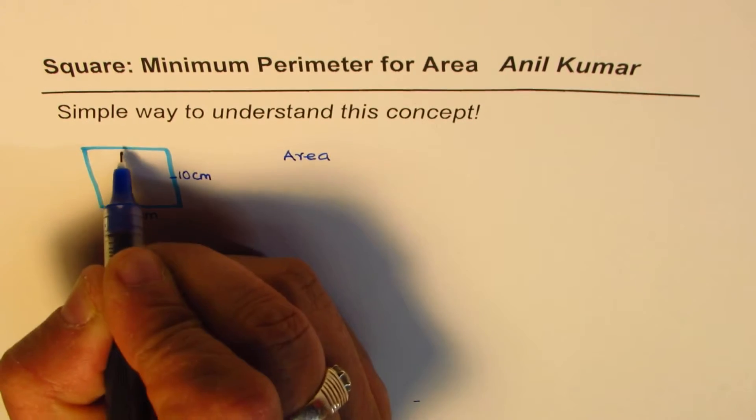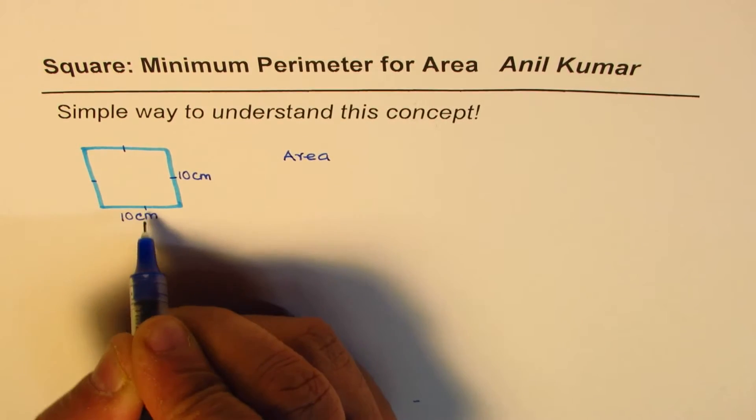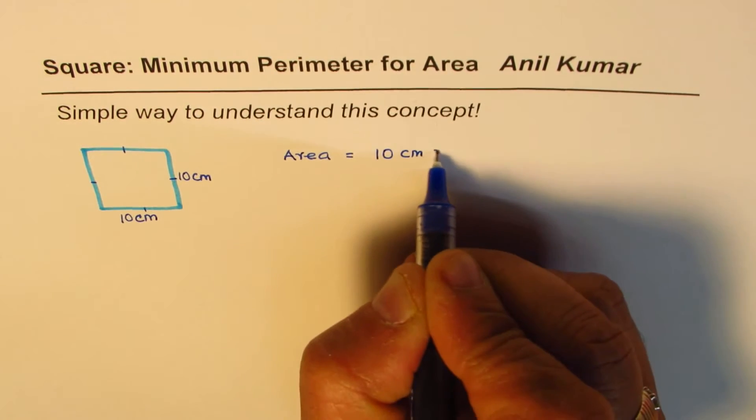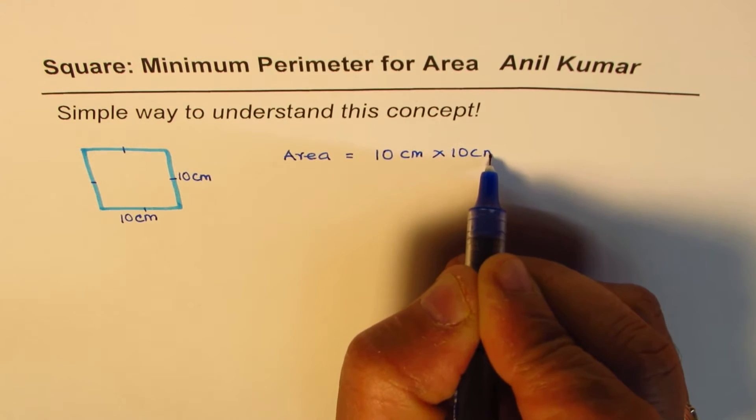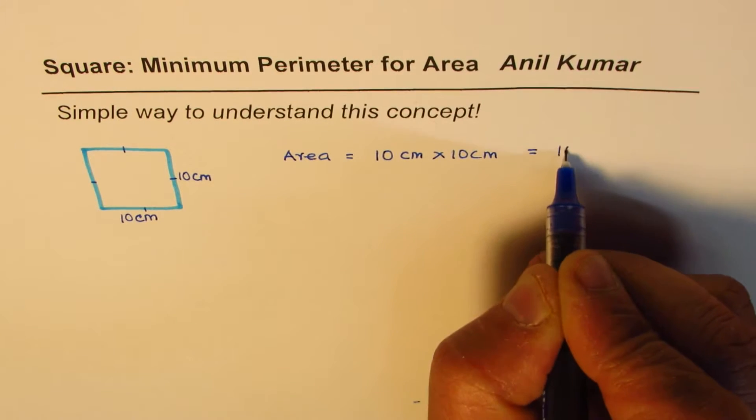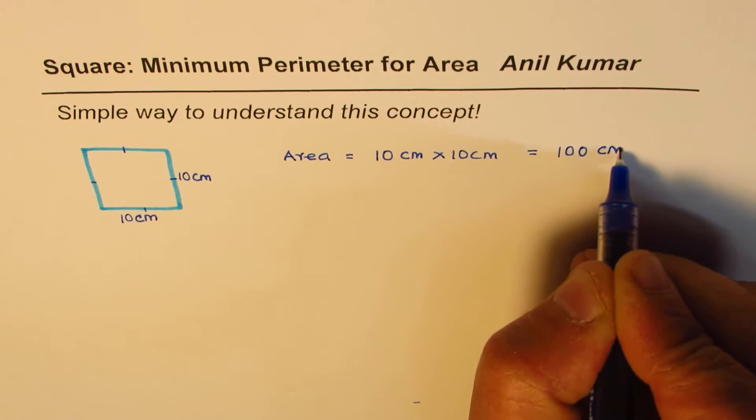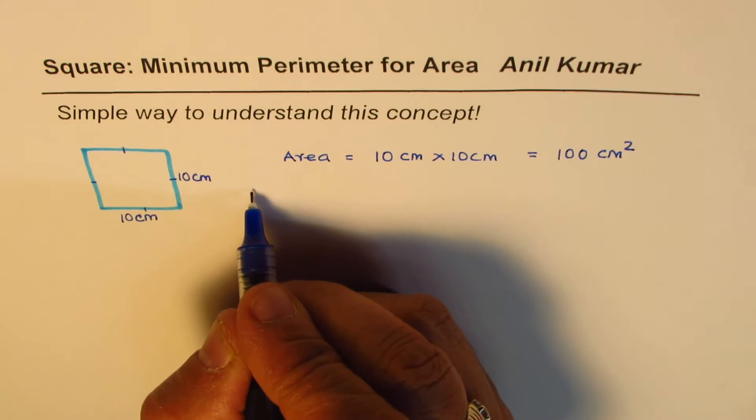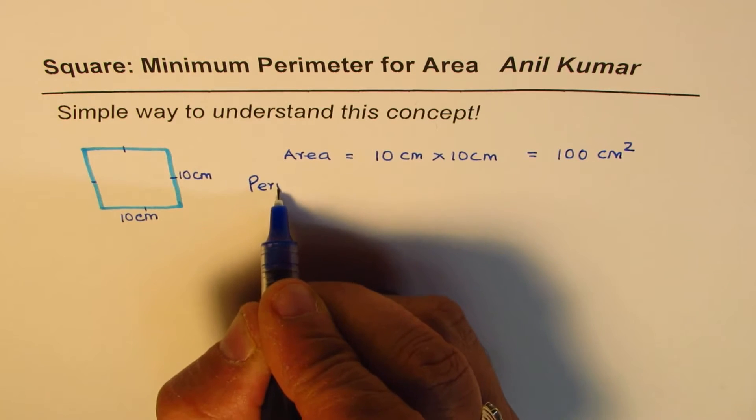All the sides are equal, right? It's a square. Area is length into width, so area is 10 centimeters times 10 centimeters, and that equals 100 centimeters square. Now let us also calculate the perimeter of this square.